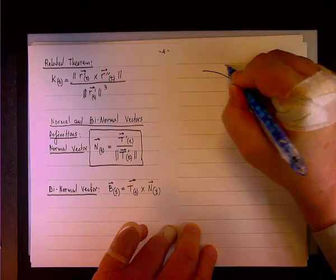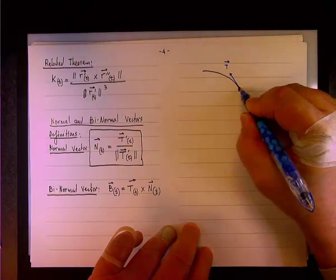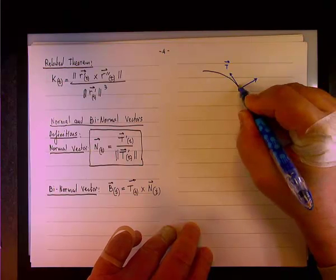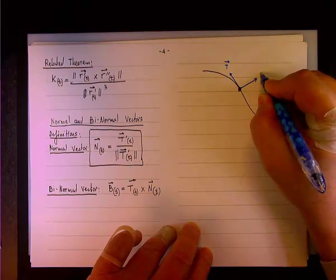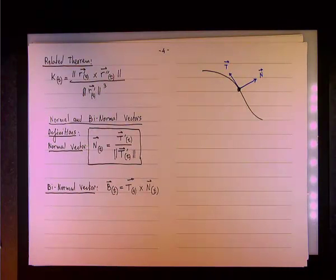So, this is T, and again, this is a unit vector. The normal will be a unit vector, so it will have the same length, such that it's perpendicular to the tangent. Because the normal is always perpendicular to the tangent.